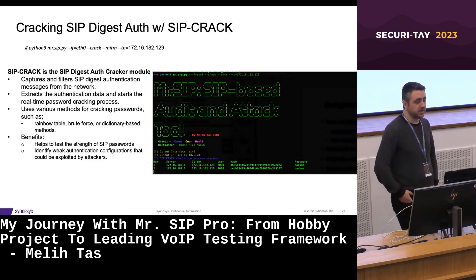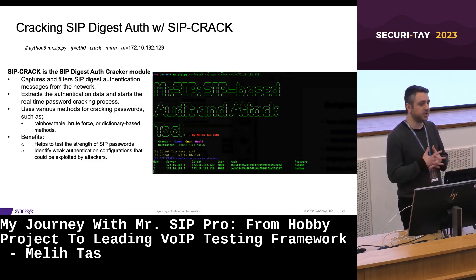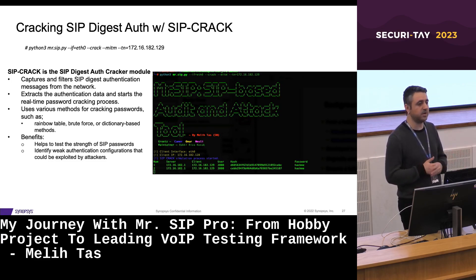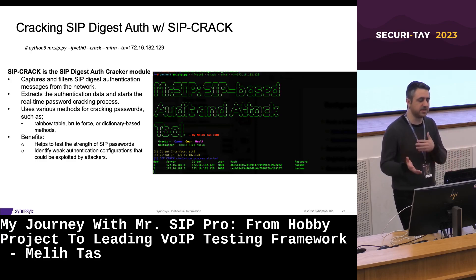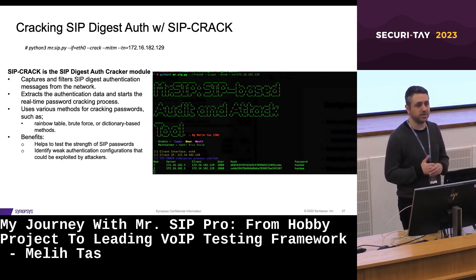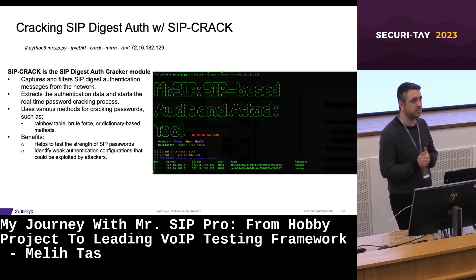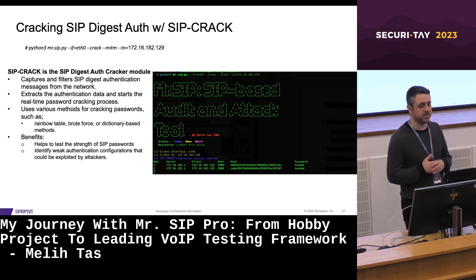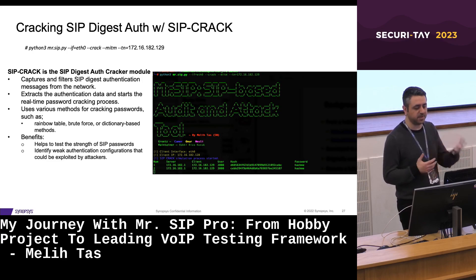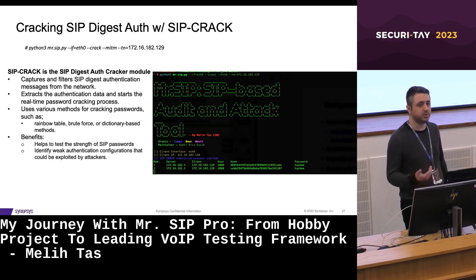We have SIP Cracker, which can be used to crack the SIP Digest Authentication process in real-time. It captures SIP traffic on the network, filters SIP Digest Authentication messages, and after extracting the authentication data, starts the password cracking process in real-time. It can use different methods of cracking passwords such as rainbow table, brute force, and dictionary-based methods. It's an essential tool for testing the strength of SIP passwords and can help identify weak authentication configurations that could be exploited by attackers.